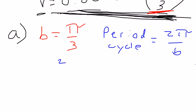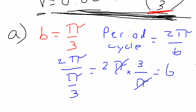Well, 2π over π over 3. Whenever you divide a number by a fraction, it's the same as multiplying by the reciprocal. So this is going to equal 2π times 3 over π. The π's cancel. You're left with 6.